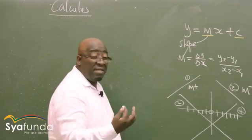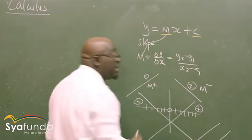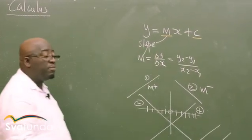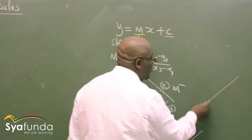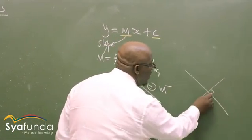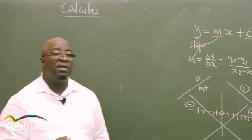Another important property: if two lines are parallel, their gradients are the same. If two lines are perpendicular, then the product of their gradients equals minus one — that is, m₁ times m₂ equals negative one. All of this is important background before we get into calculus.